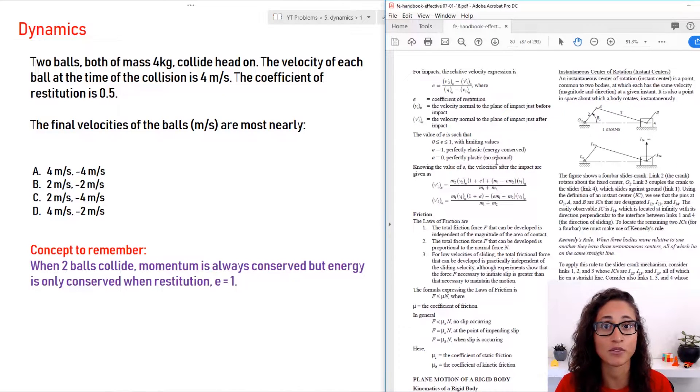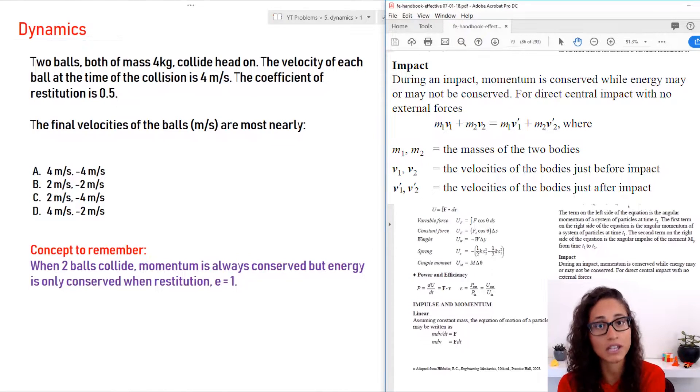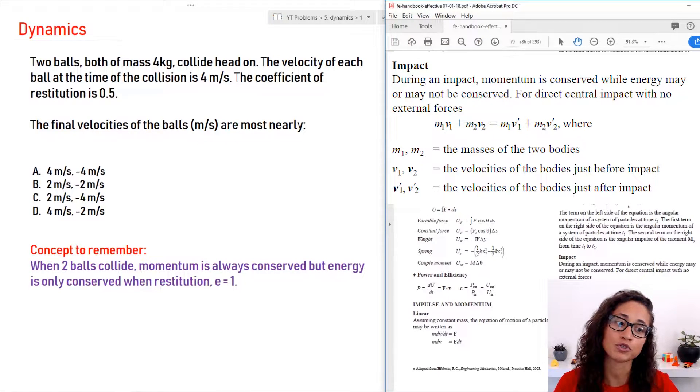And a lot of times in the FE exam, you actually need to use the momentum plus the restitution equation. So let me go over those a little bit. If you go to page 79 here, you will see that you are given the momentum equations. M1 V1 plus M2 V2, those are for the initial, which means before the impact happened, before any sort of collision happened.